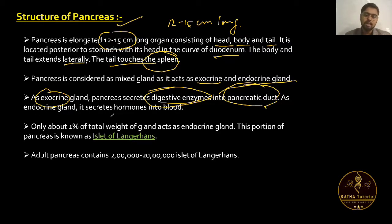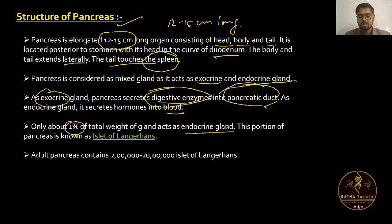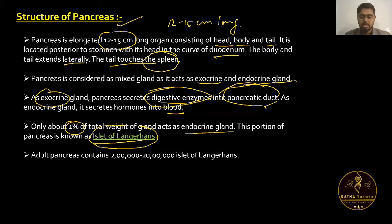As an endocrine gland, it secretes hormones into the blood. Only about 1% of the total weight of the gland acts as endocrine. The endocrine portion is called the Islets of Langerhans.